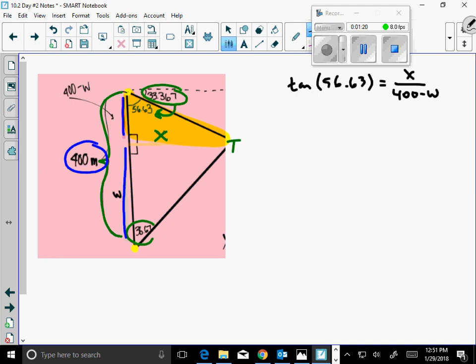So what would X equal? Well, X would equal 400 minus W times the tangent of that angle. Okay, so I've solved for X.